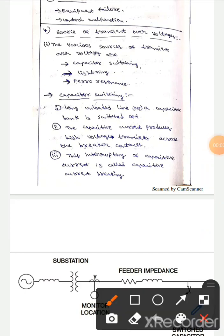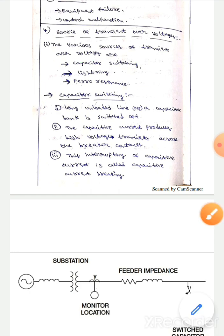Hello guys, I hope you're all fine. Let's talk about the sources of transient over voltages. There are various sources of transient over voltages: capacitor switching, lightning, and ferro resonance.